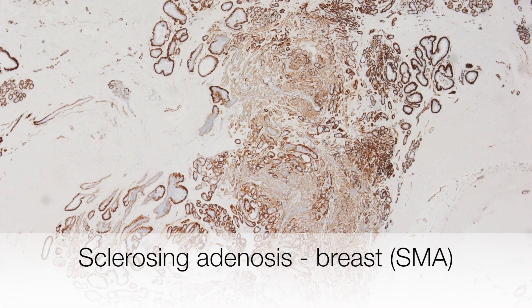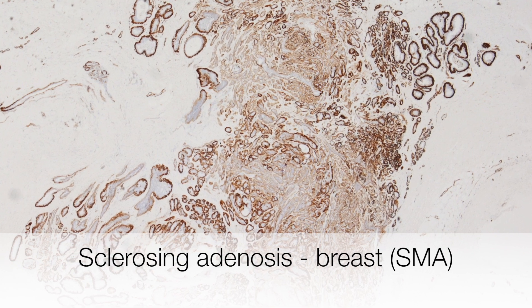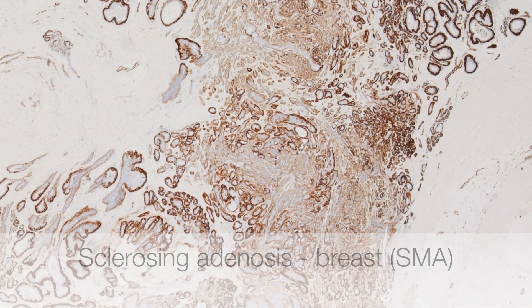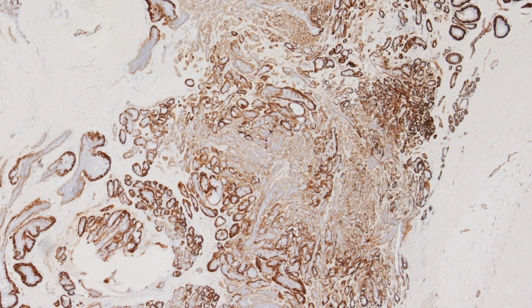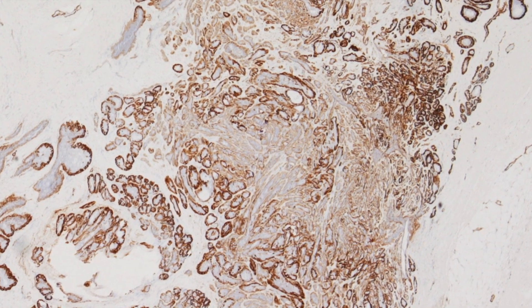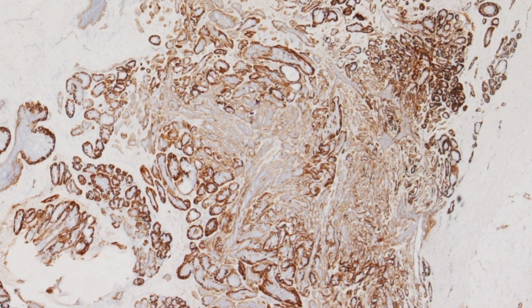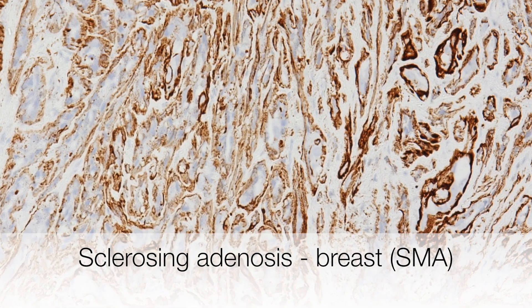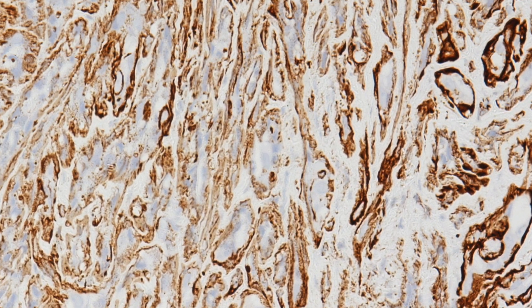The most useful stain for diagnosing sclerosing adenosis is smooth muscle actin. This is the stain for myoepithelial cells. The low-power view shows a browner appearance of the lesion in the central area because of the prominent component of myoepithelial cells centrally. This higher power view shows positive staining of myoepithelial cells for smooth muscle actin and negative staining of the luminal epithelial cells.